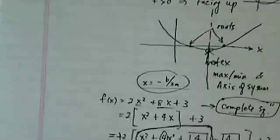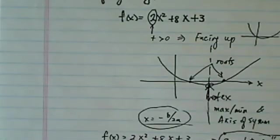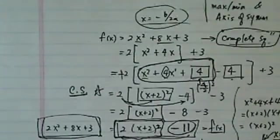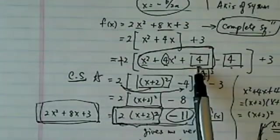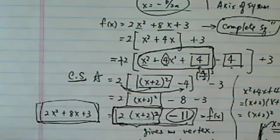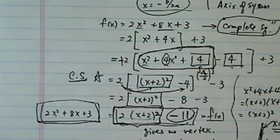Alright, so a quick review. When you're looking for axis of symmetry, think complete square. Complete square, all it's saying is add a magic number, take it away, and that's all you have to do, really. Nothing really tedious about it.